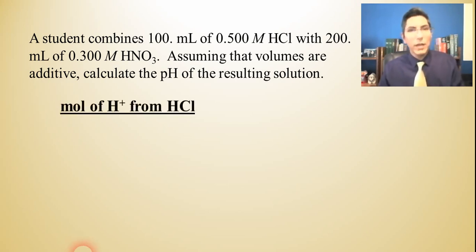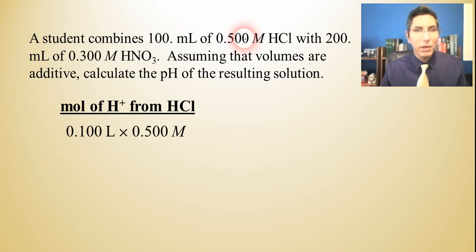Let's find how many moles of H+ are coming from the HCl. We take the 0.1 liters times 0.5 moles per liter. You multiply that, and it's 0.05 moles of H+. That's coming from just the hydrochloric.